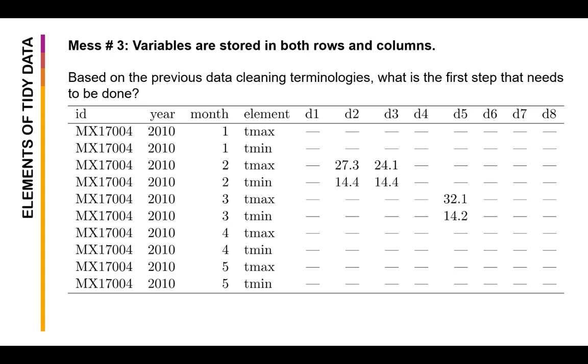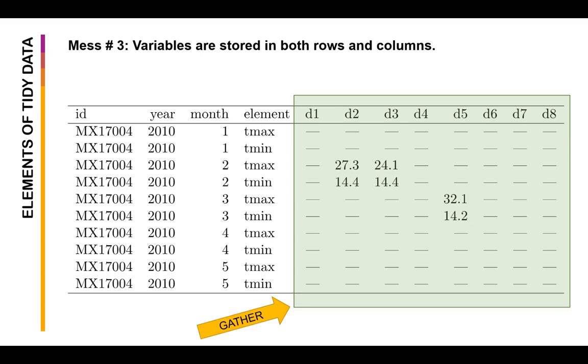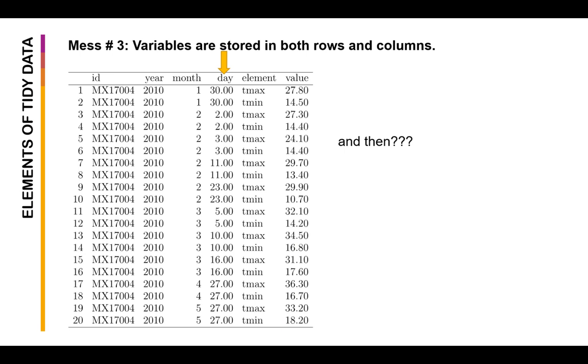Now if you look at it, we have the different days spread out on the columns. We can easily gather it or unpivot it or melt it so that we can have each day on the rows. Now from here we can probably combine the year, month, and day to form the dates. Now the issue here is that one day is still represented by two different rows. From the tidy data principle, it has to be a distinct observation per row. Now if we look at it, we have two main measures here: the minimum temperature or T min and the maximum temperature or T max.